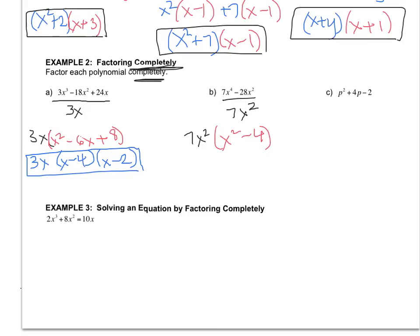So it's a binomial. It's a subtraction. And each piece is a perfect square because this is x times x, and this is 2 times 2. So the answer to, or the factored form of that difference of two squares is x plus 2, x minus 2. And then again, don't forget to bring the 7x squared back out front.